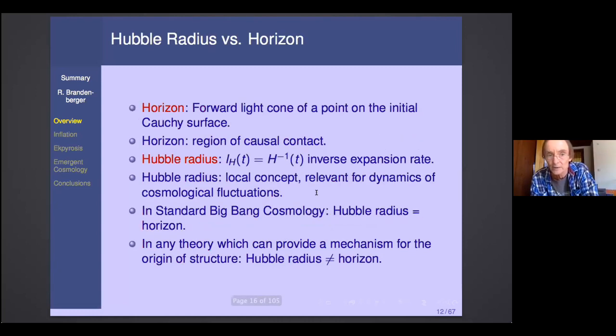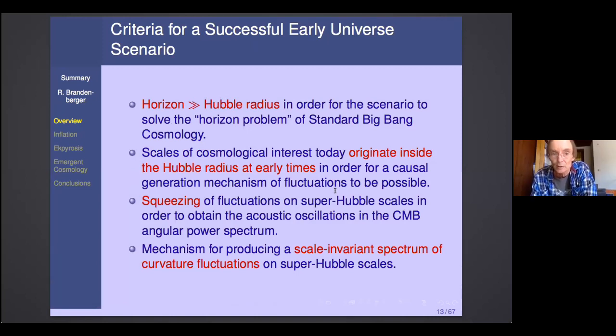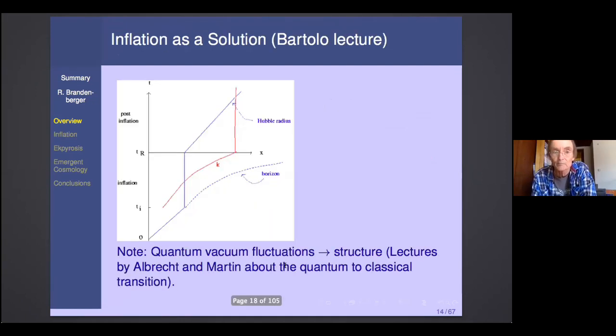So I remind the students of the difference between Hubble radius and horizon. The horizon is the forward light cone of a point on the initial Cauchy surface, and it carries causal contact information. The Hubble radius is a local concept. It is simply the inverse expansion rate. In standard big bang cosmology, the two are the same, and therefore we have a horizon problem. In any successful early universe cosmology, the horizon has to be much larger than the Hubble radius today. Scales that we observe today have to originate inside the Hubble radius at early times. And you need to have a scaling spectrum.